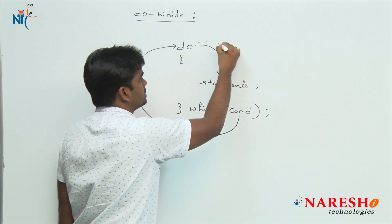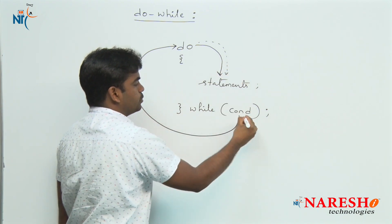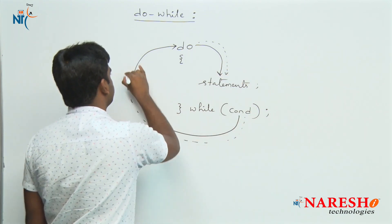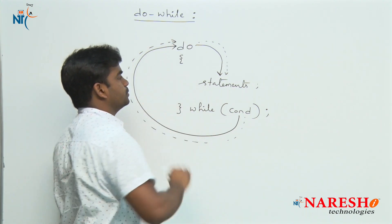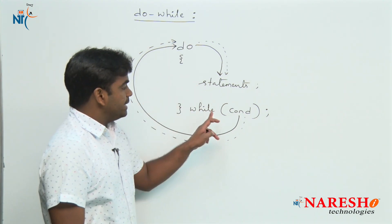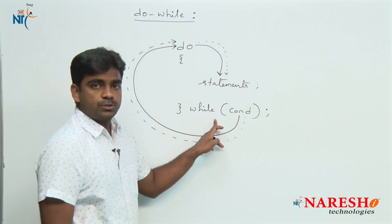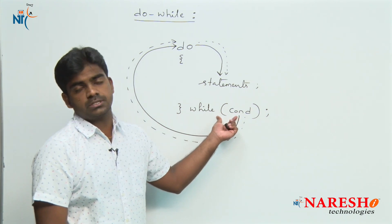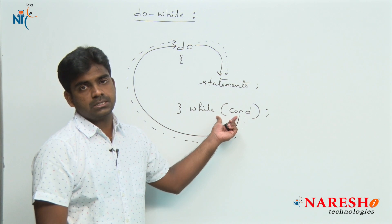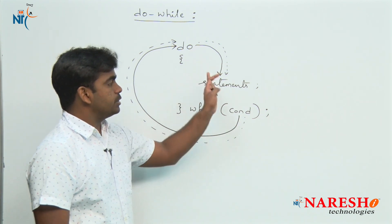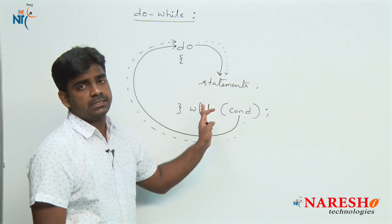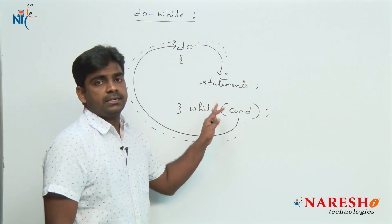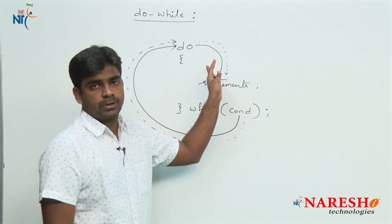Again it will go inside and execute the statements. If the condition is true, it will repeat. This process will continue. It terminates only when the given condition is false. So, first execute the statements and then check the condition — whereas in a while loop, first check the condition and then execute the statements.